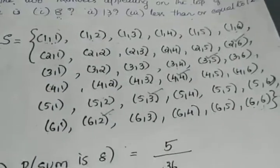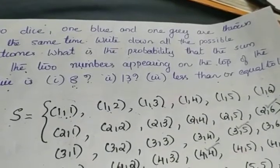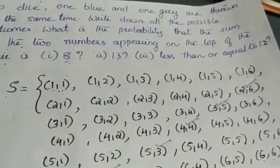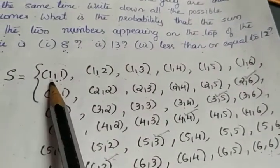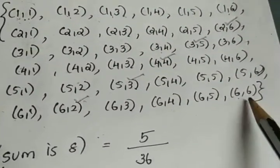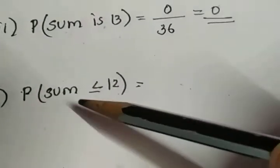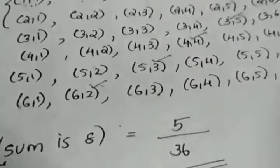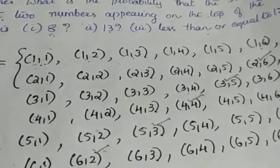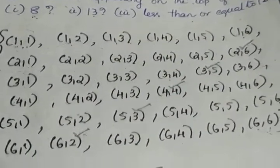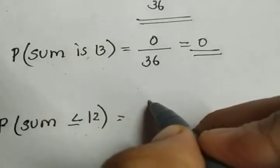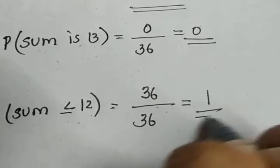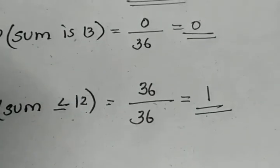And the third case is P of getting sum less than or equal to 12. That also we already discussed. The least sum possible is 2 and the highest sum possible is 12. And in the question, we have to find the probability that the sum is less than or equal to 12. That means all these outcomes are having sum less than or equal to 12. So the number of favorable outcomes is 36 and total number of outcomes is also 36, giving you the probability value 1, which is a sure event.